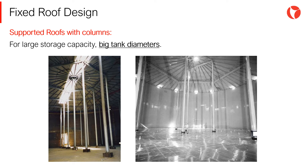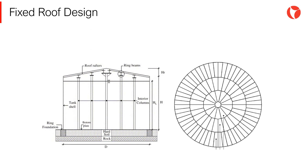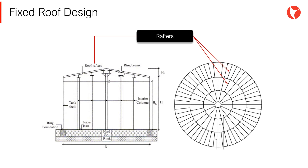Depending on the loads to be supported, columns will be located on the edges of the polygon. Beams receive the loads from the rafters and transmit these loads to the columns. The objective of the columns is to minimize the weight of the roof transmitted to the shell, reducing the cost of the structure and, more importantly, transmitting lower axial loads to the tank wall.